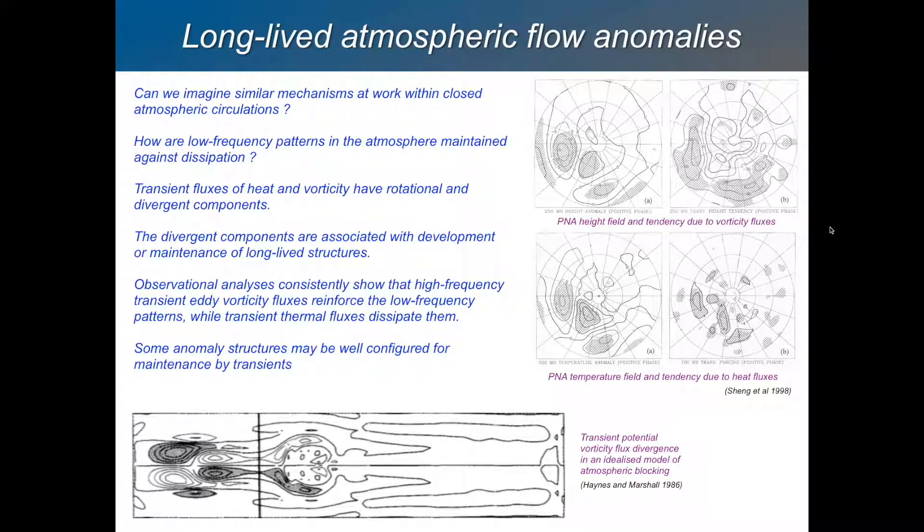During episodes of positive PNA, transient eddy momentum fluxes will act to maintain that pattern in the geopotential height. If we look at the temperature fluxes, here's the same composite, and what we see is cold, warm, cold. Then we look at the transient fluxes of temperature—there it's not the same. The transient fluxes of heat are warming up where it's cold and cooling down where it's warm. So they're dissipating the temperature signature, but they're reinforcing the signature in vorticity or momentum.